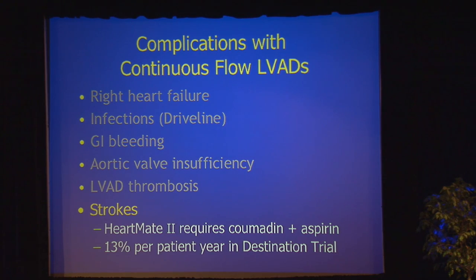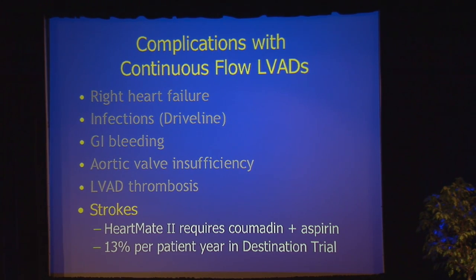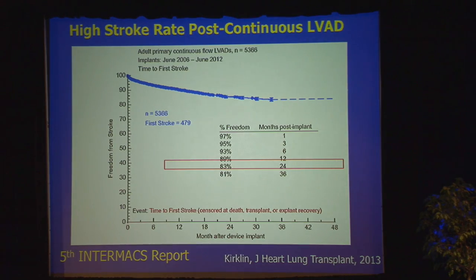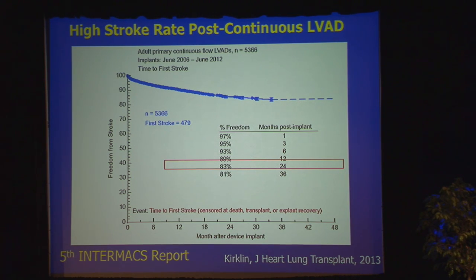The risk that concerns me most is strokes — this is the one that gives me pause before I refer my patient for implantation. These pumps require Coumadin plus an antiplatelet agent, and in the destination therapy trial, the stroke rate was 13% per patient-year. Even more recent data from INTERMACS shows an 11% stroke rate at one year. A one-in-ten risk of having a stroke in that first year is certainly something that gives me pause before referring patients for one of these pumps.